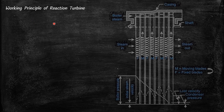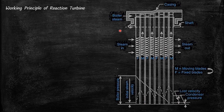Next we will discuss the working principle of a reaction turbine. The reaction turbine has a set of fixed blades and moving blades — one row of fixed blades and one row of moving blades per stage. This reaction turbine has four stages: the first stage contains a fixed blade and a moving blade, and the second stage again a fixed blade and a moving blade, and so on.